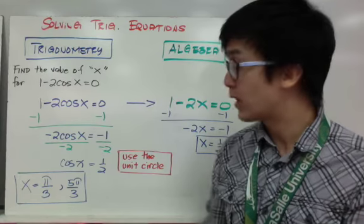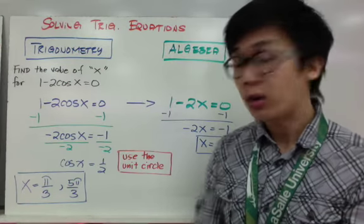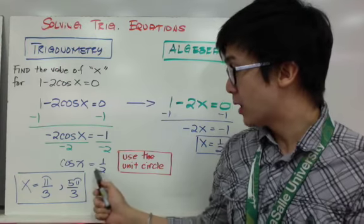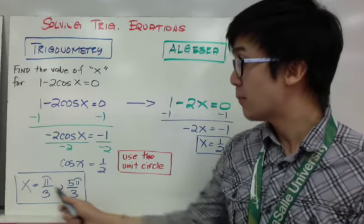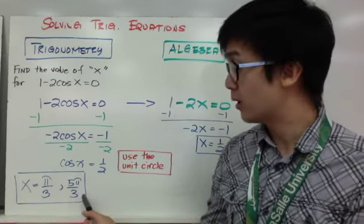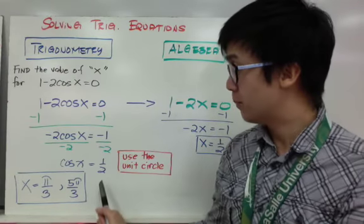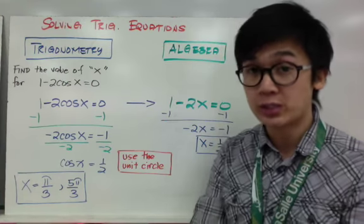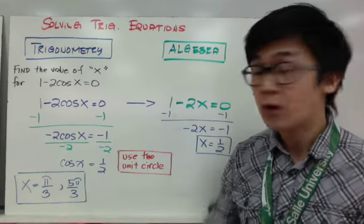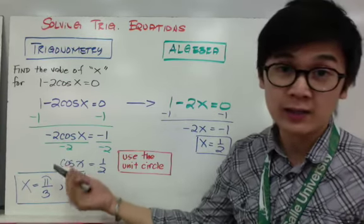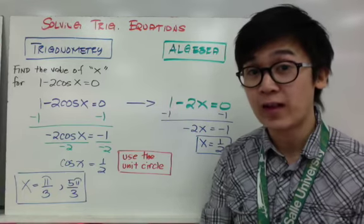The solution does not end at cosine x = 1/2 because we are solving for x, not cosine x. To solve for x, use the unit circle and find all values where cosine equals 1/2. Those values are π/3 and 5π/3. This is the added step in solving trig functions — you need the unit circle to finish, unlike algebra where finding x ends the problem.